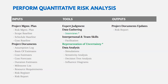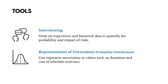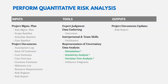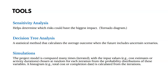Two key tools are interviewing and representations of uncertainty. Interviewing draws on experience and historical data to quantify probability and impact. Representations of uncertainty use probability distributions to represent uncertainties in values and give an idea of potential impact on durations and cost. Other data analysis techniques include simulation, sensitivity analysis, and decision tree analysis. Sensitivity analysis determines which risk could have the biggest impact, sometimes shown on a tornado diagram. Decision tree analysis calculates the average outcome when the future includes uncertain scenarios.